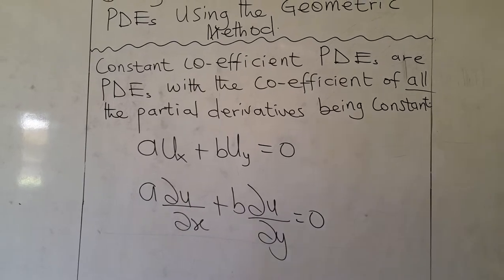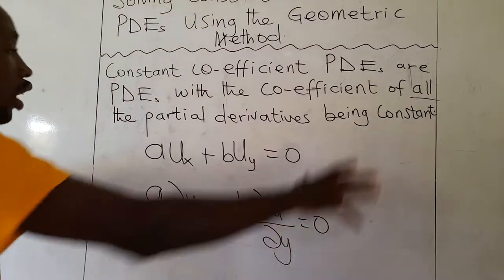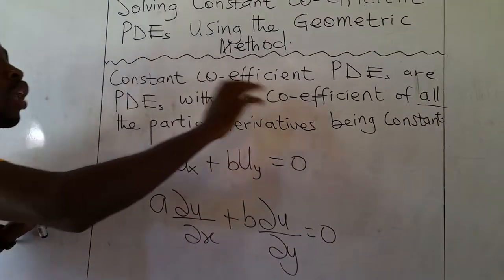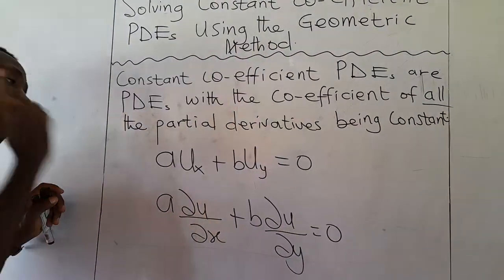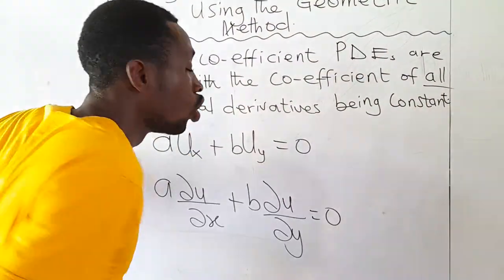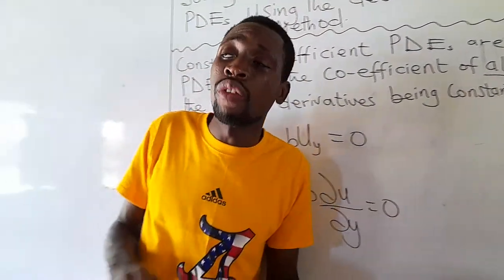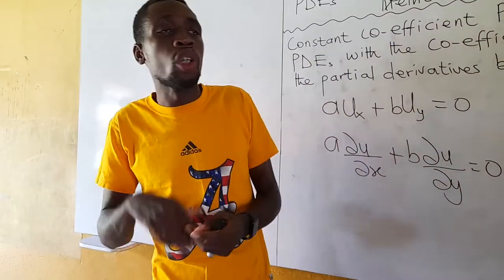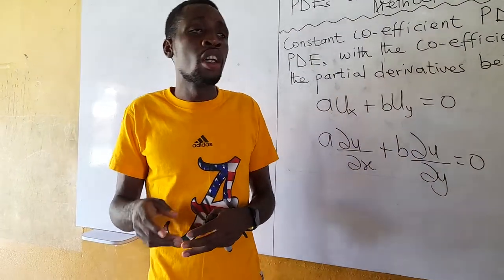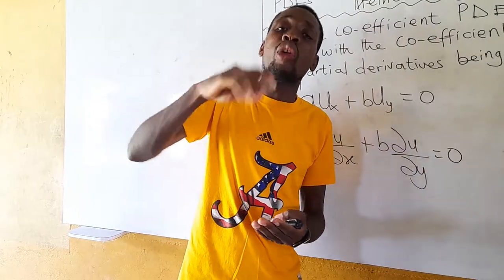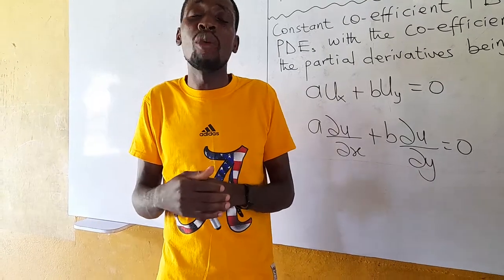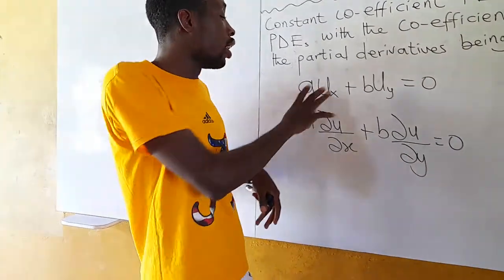When we talk of constant coefficient partial differential equations, these are partial differential equations where the coefficients of all the partial derivatives are constant. In one of my videos, we will learn how to classify partial differential equations as having constant or variable coefficients. If you have not watched that video, please check it out on YouTube. So they take this form.